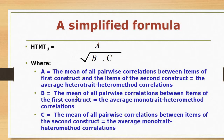B is the mean of all pairwise correlations between the items of the first construct among each other — what we call the average mono-trait hetero-method correlations. For constructs X and Y, if all items of X are correlated with each other and we take the average, we get B. C repeats the same process for the second construct Y: calculate the correlation coefficients for all pairs of items of Y, take the average, and we get C.